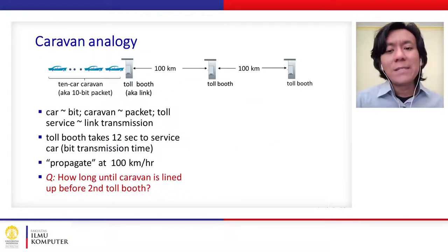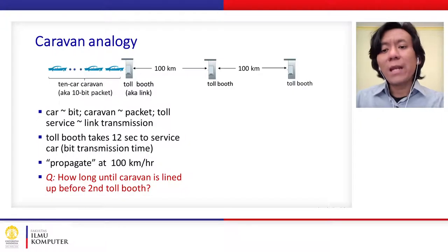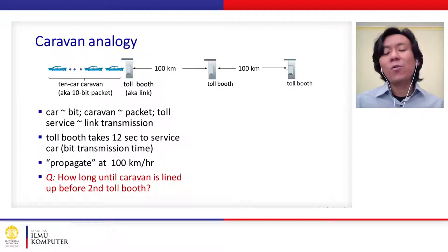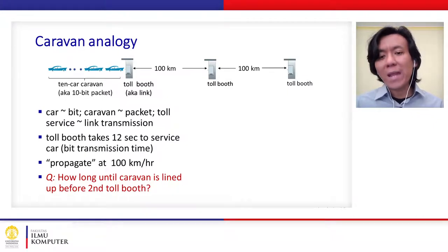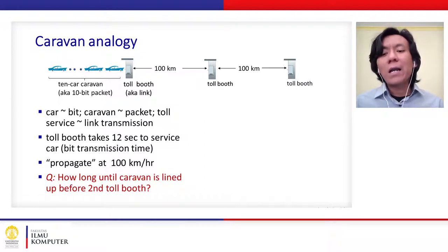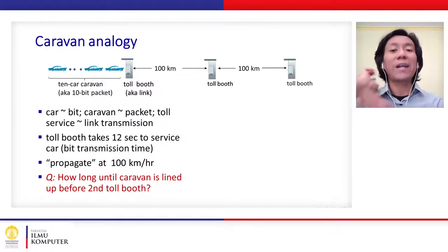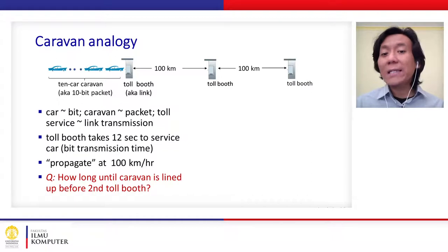Let's see an analogy: the caravan. There are 10 cars in a caravan that want to travel from one city to another through a toll road. When they arrive at the first toll booth, they have to queue up because the toll booth takes 12 seconds to service one car. The toll road is 100 kilometers and cars travel at 100 kilometers per hour.